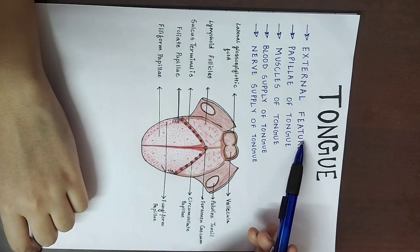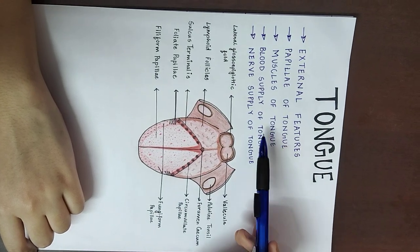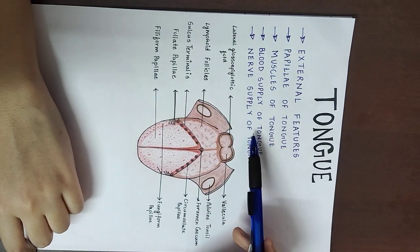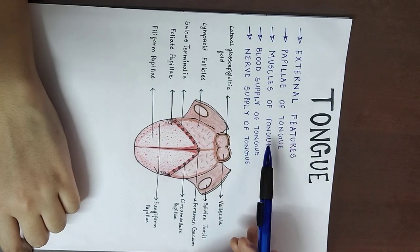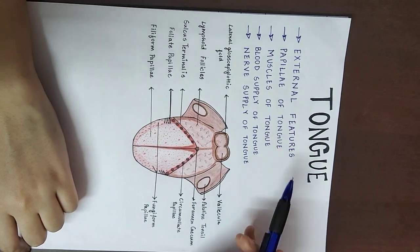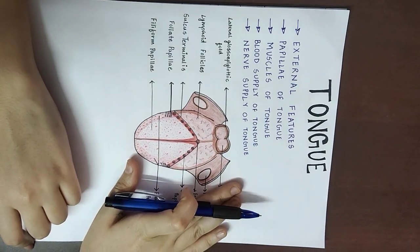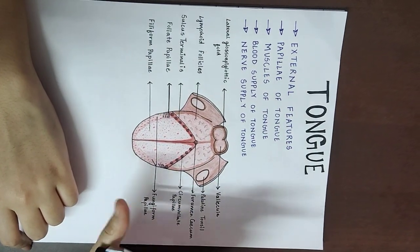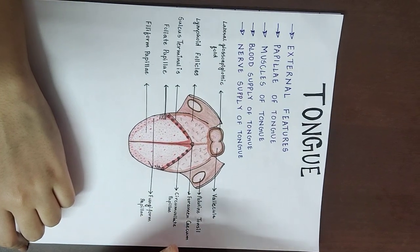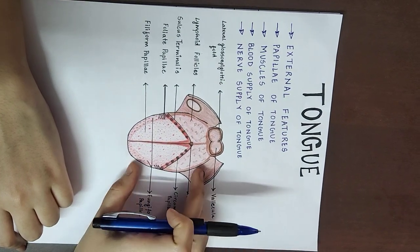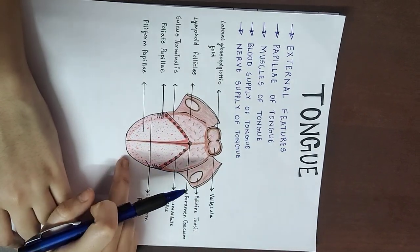Here we'll learn about the external features, papillae, muscles, blood supply, and the nerve supply. Let's start with the external features. If we look at the tongue, we can divide it into three parts: one is the root, then the body, and then comes the tip of the tongue.